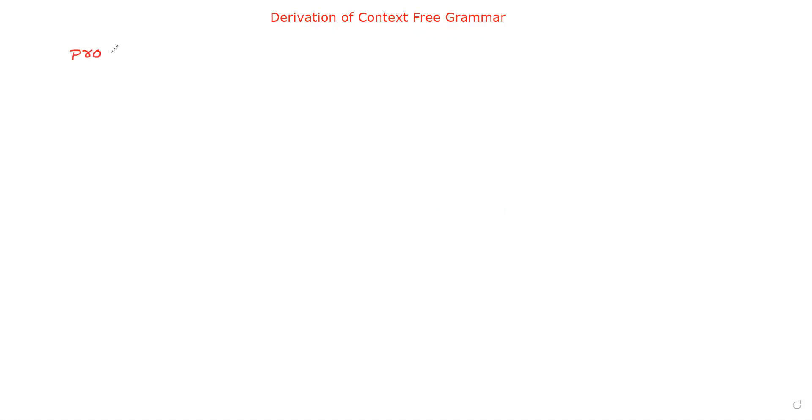Welcome to our channel. In this session we will discuss derivation of context-free grammar. Simply, derivation is the process of generating strings from a given grammar. By using the productions of the grammar, we generate a string — that is called derivation. In simple terms, non-terminals are replaced by their productions.